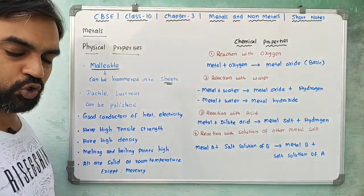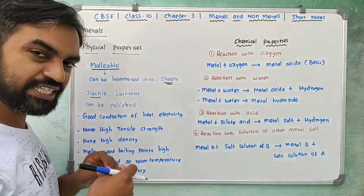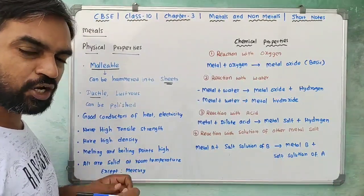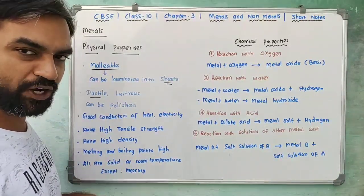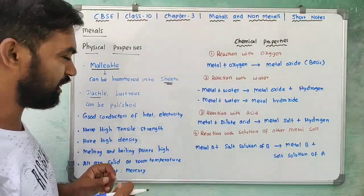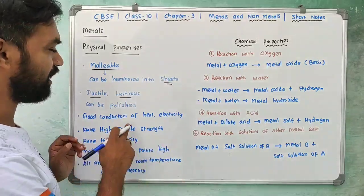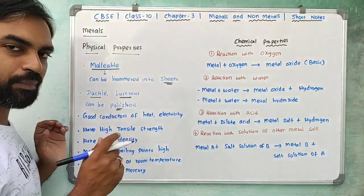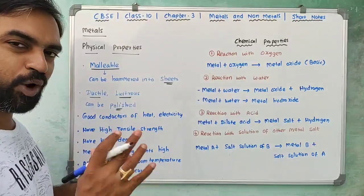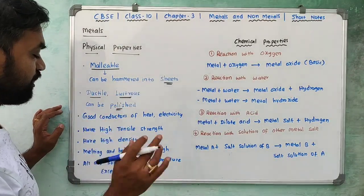Now, the physical properties of metals. Metals are malleable — they can be beaten into sheets. Ductile means they can be drawn into wires. Metals can be polished to a shiny surface, and they are tough and rough. These are some of the physical properties of metals.